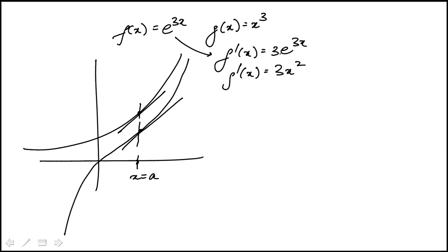So the slope at these two points, the condition would be 3e to the 3a equals 3a squared. So the value of a that would satisfy this equation would give me that condition.